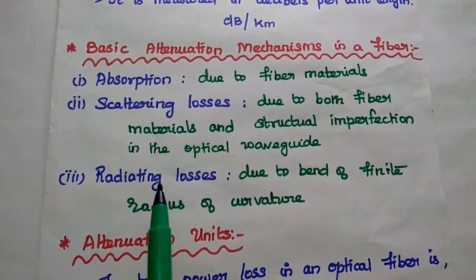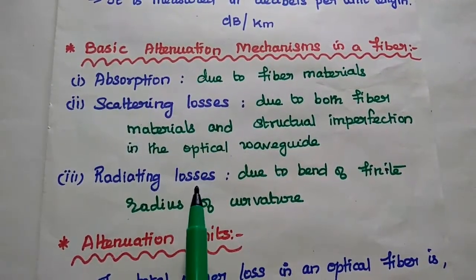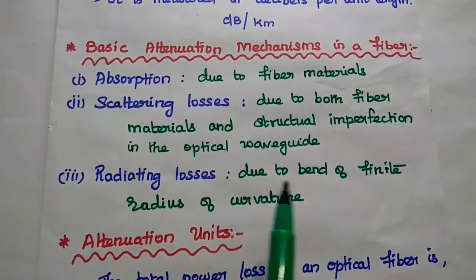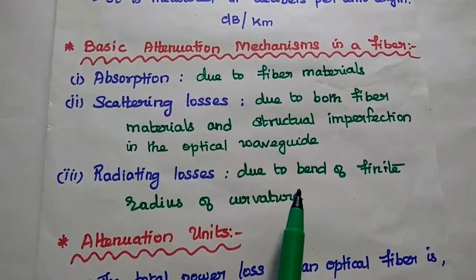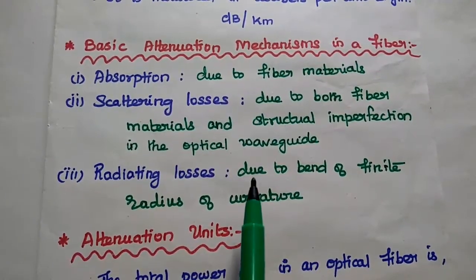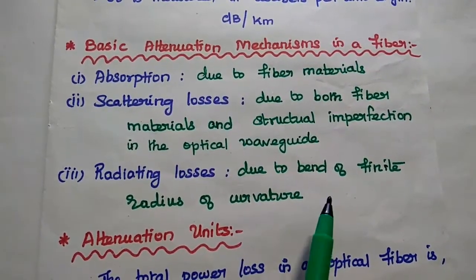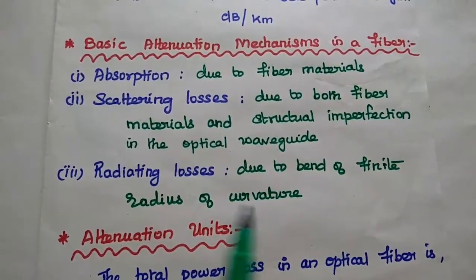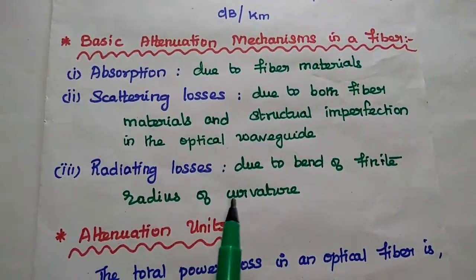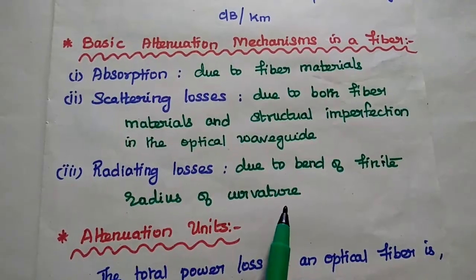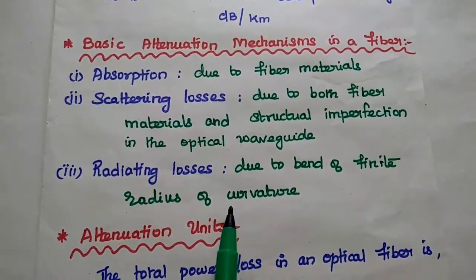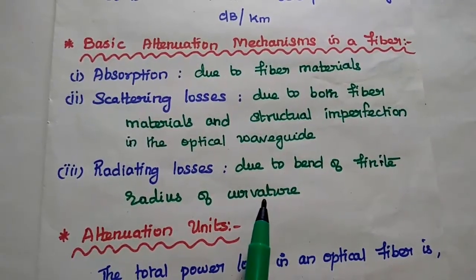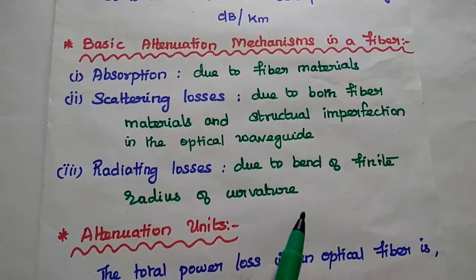Radiating losses are related to the bending of the fiber cable — specifically due to bends of finite radius of curvature. There are two types of bending losses available: one is micro bending and the next one is macro bending losses.